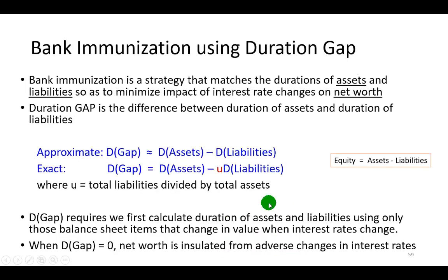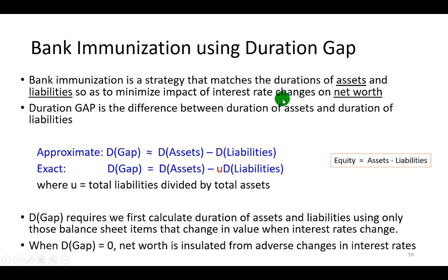When interest rates rise, the value of assets tends to fall more than the value of liabilities, which causes the value of the bank's equity to drop. Bank immunization is a strategy that matches the duration of assets with that of liabilities so as to immunize the impact of interest rate changes on the bank's net worth.